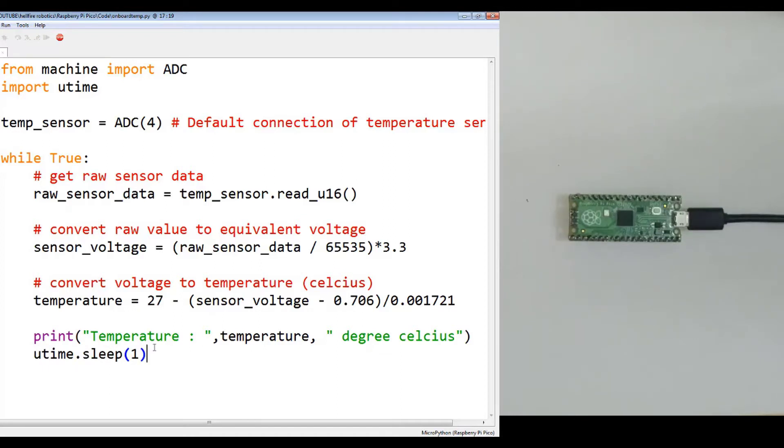So that is all, how we can access the raw sensor data, convert it into an equivalent voltage, and then finally convert that voltage into a particular temperature reading in terms of degree Celsius. Thank you very much for watching the video.